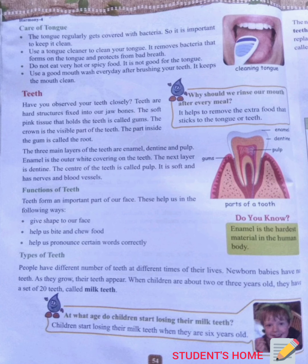Now, care of tongue: the tongue regularly gets covered with bacteria, so it is important to keep it clean. Use a tongue cleaner to clean your tongue — it removes bacteria that forms on the tongue and protects from bad breath. Do not eat very hot or spicy food, as it is not good for the tongue. Use a good mouthwash every day after brushing your teeth to keep the mouth clean.